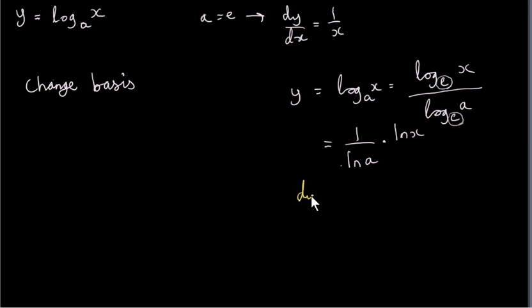When we go to get the derivative, dy/dx, this constant is multiplied by ln of x, so we just leave it to one side. We have 1 over ln of a multiplied by the derivative of ln of x, which as I've explained already is 1 over x.